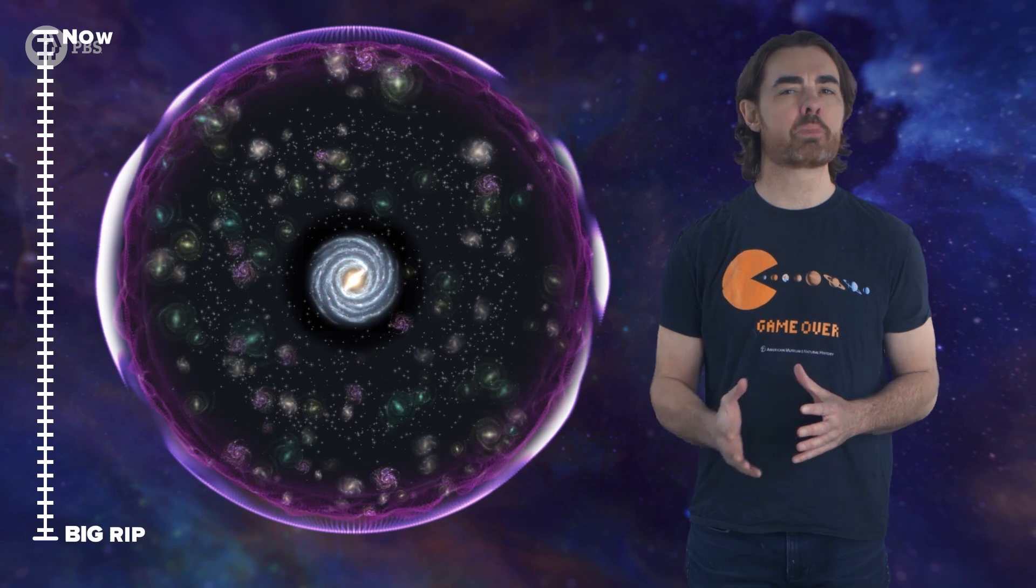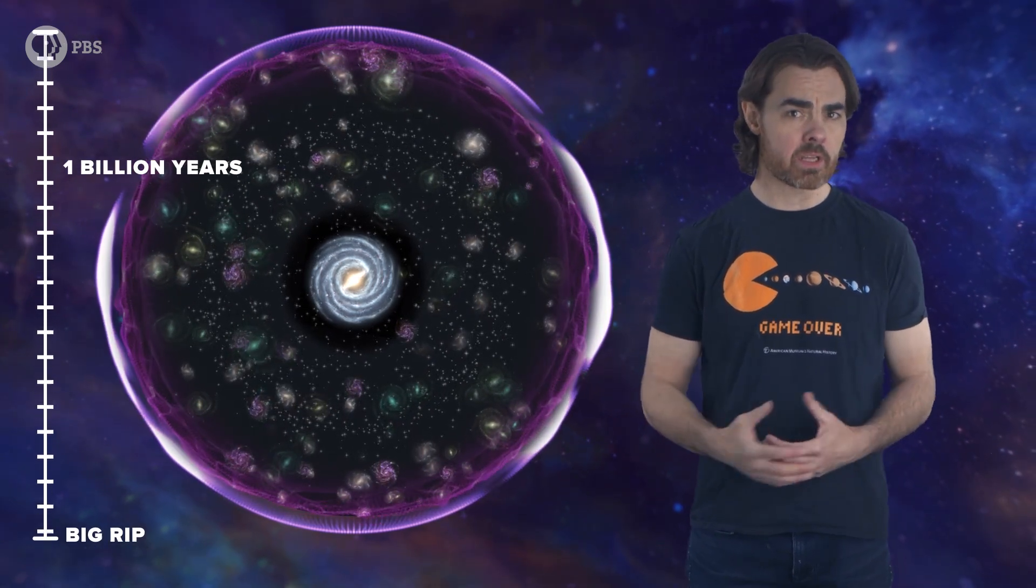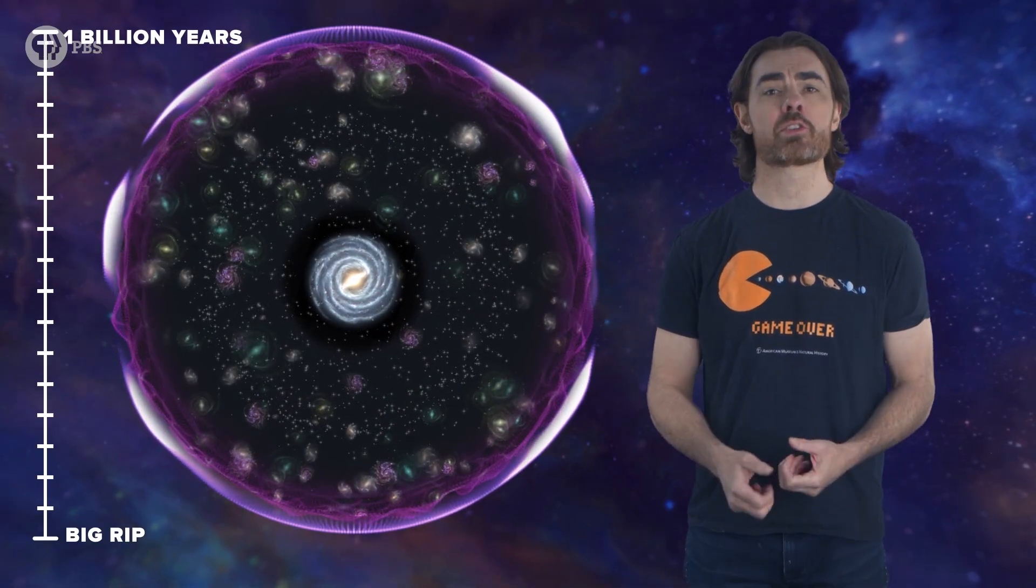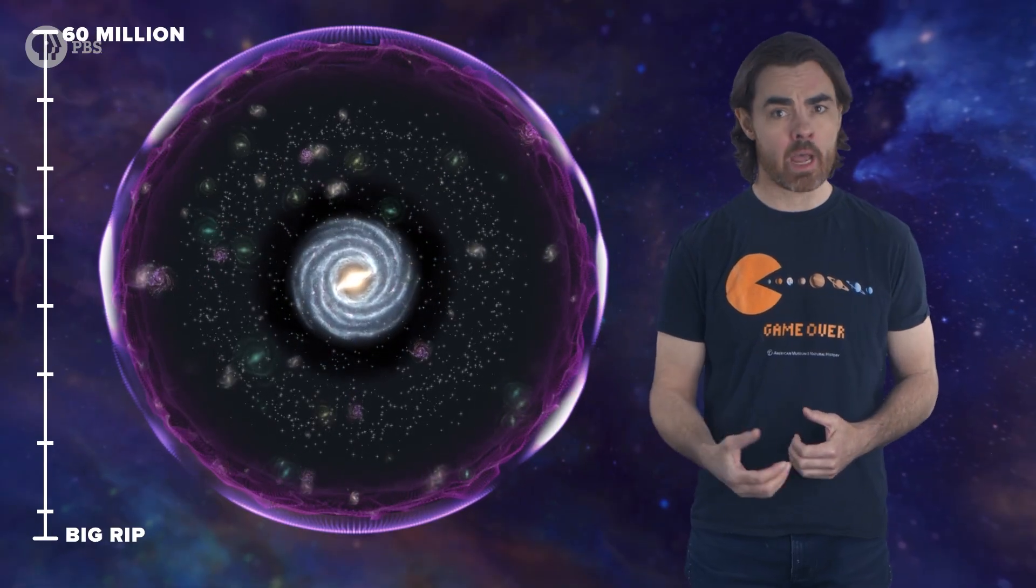Caldwell does this calculation for the case of w equals negative 1.5. In this scenario, the big rip happens in 22 billion years from now. Things don't get really messy until near the end. Around a billion years before the big rip, galaxy clusters are ripped apart. At 60 million years and counting, the Milky Way is shredded.